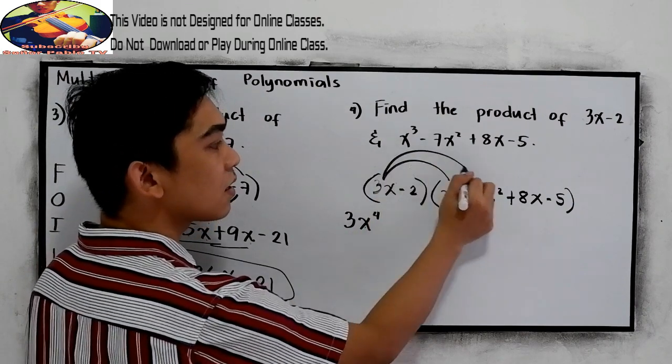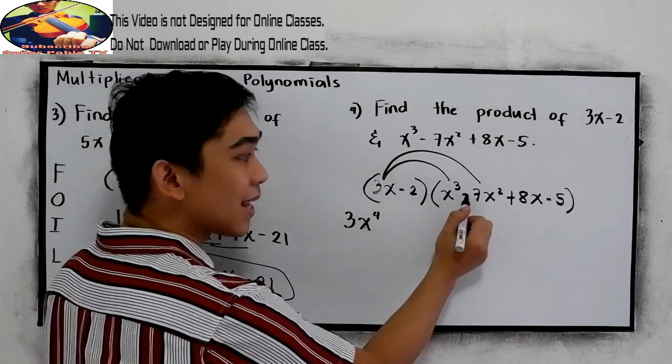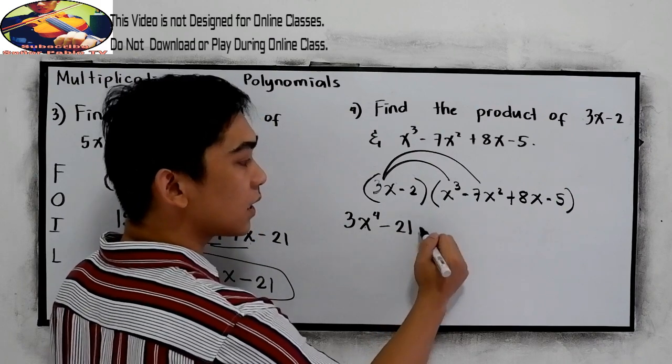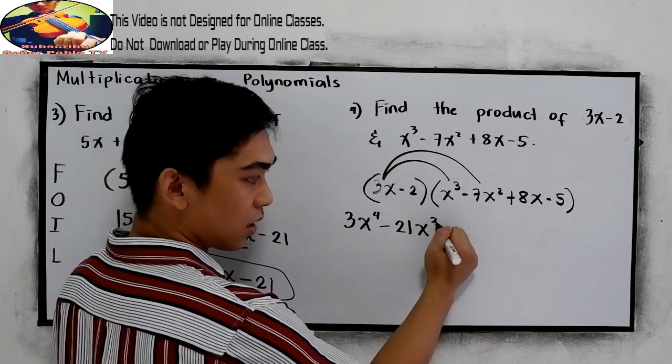Next, 3x times negative 7x squared. So 3 times negative 7 is negative 21x. 1 plus 2, 3.